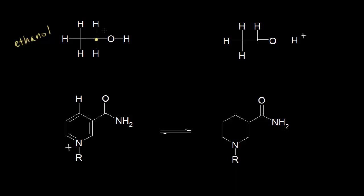And in the liver, ethanol is oxidized to ethanal. So over here on the right is the ethanal molecule, a two-carbon aldehyde. And once again, we're concerned with that carbon — the carbon in yellow. One easy way to tell that ethanol was oxidized to ethanal is to see that on the left we have one bond of that carbon to oxygen, and over here on the right we now have two bonds of that carbon to oxygen.